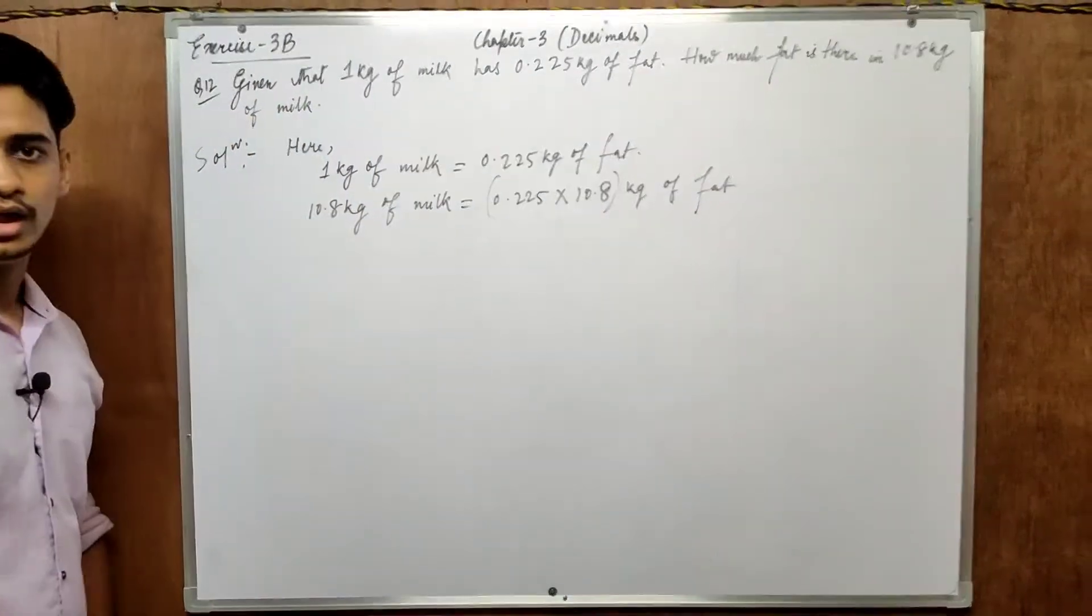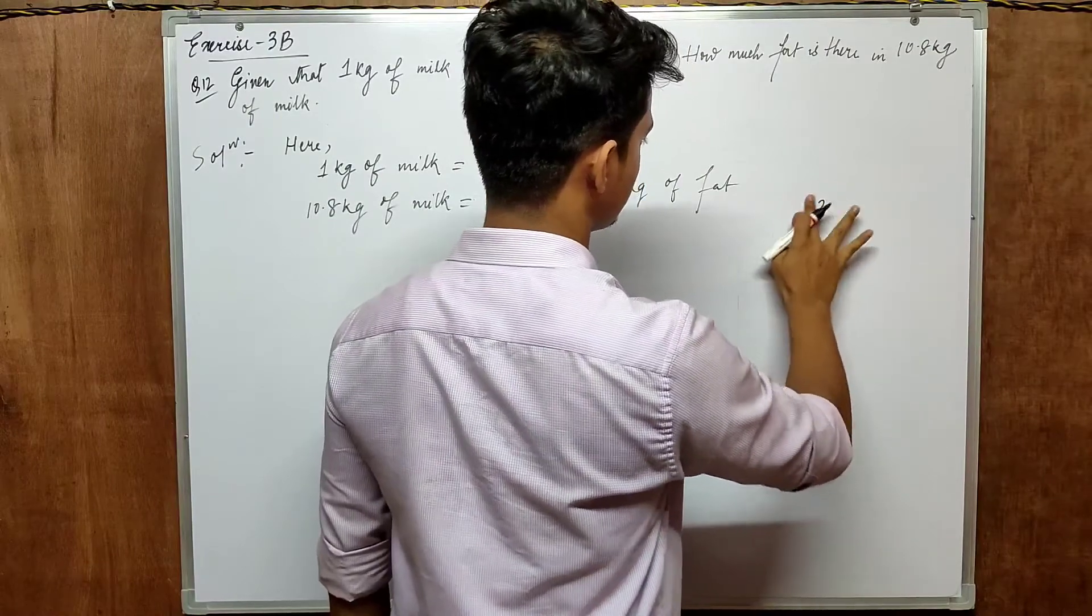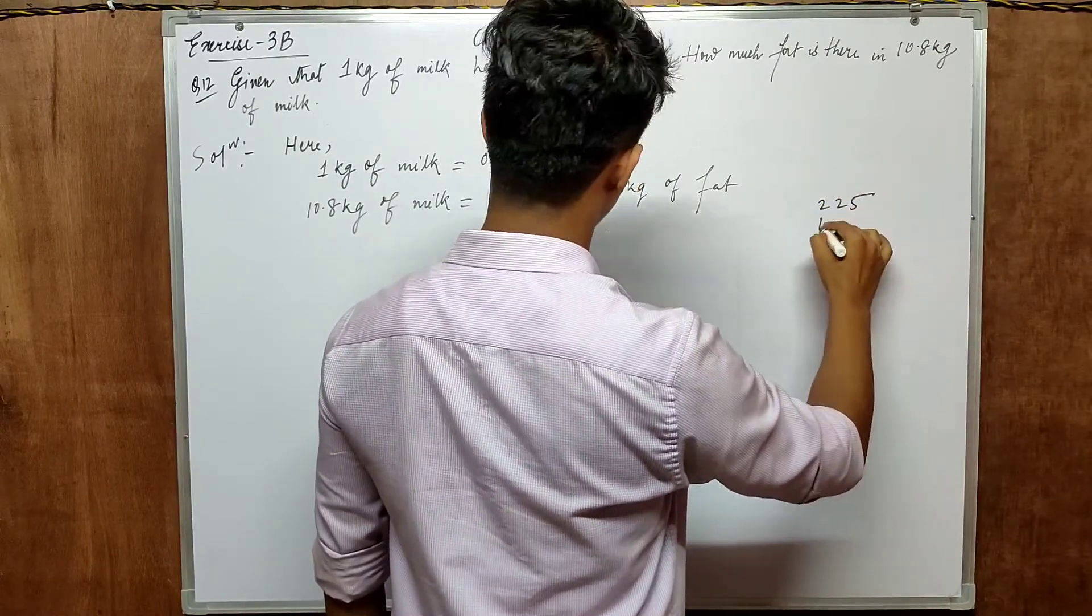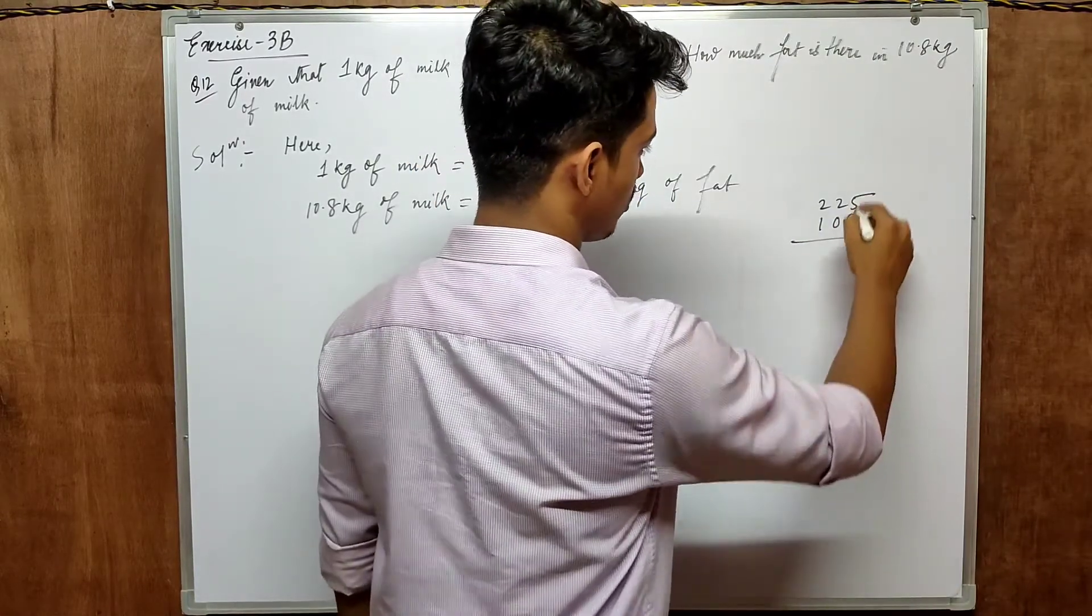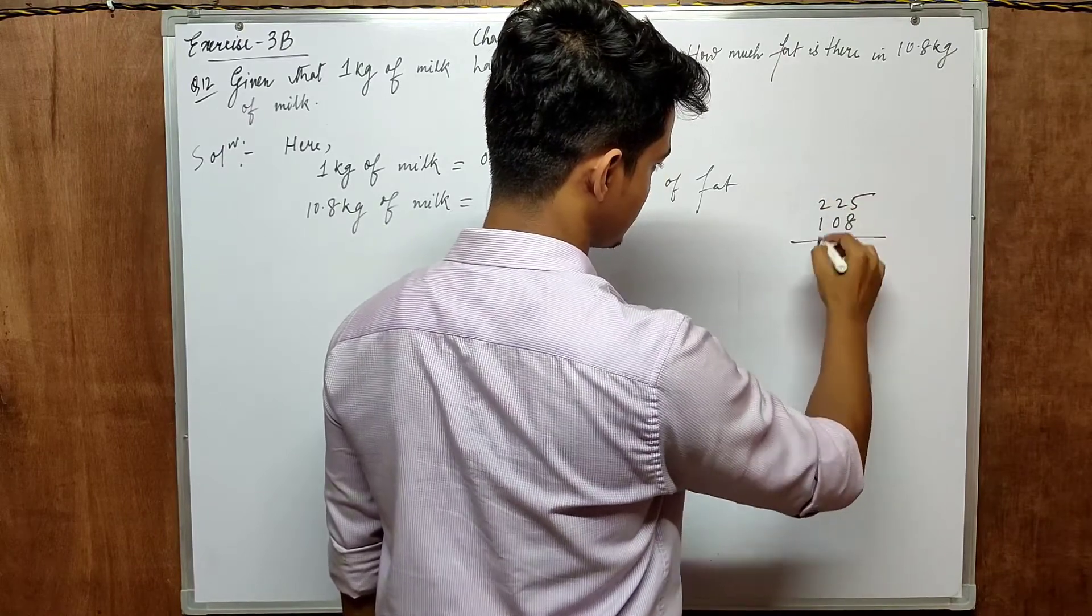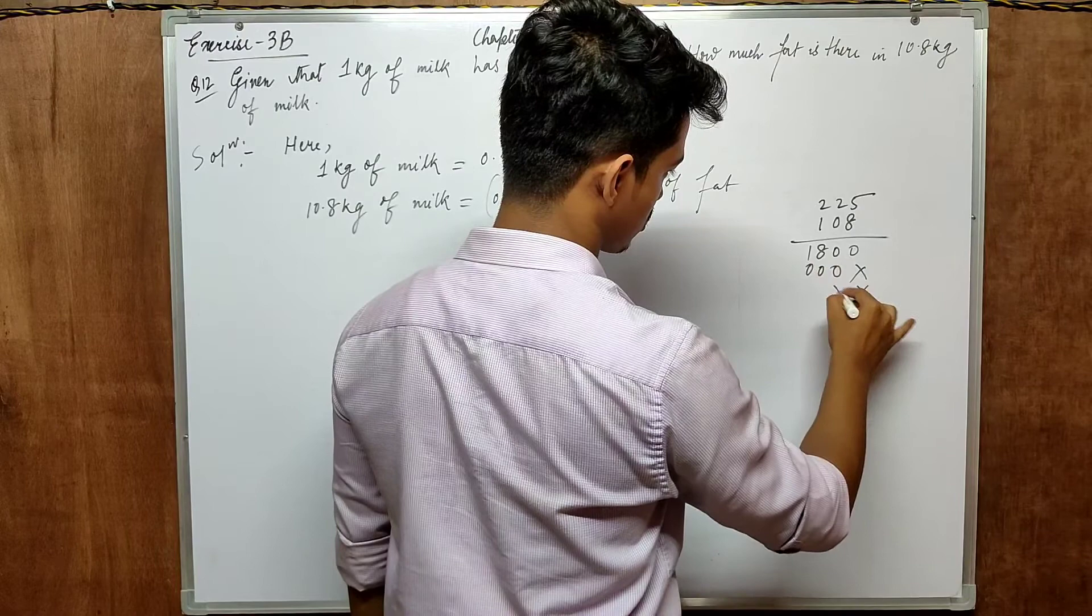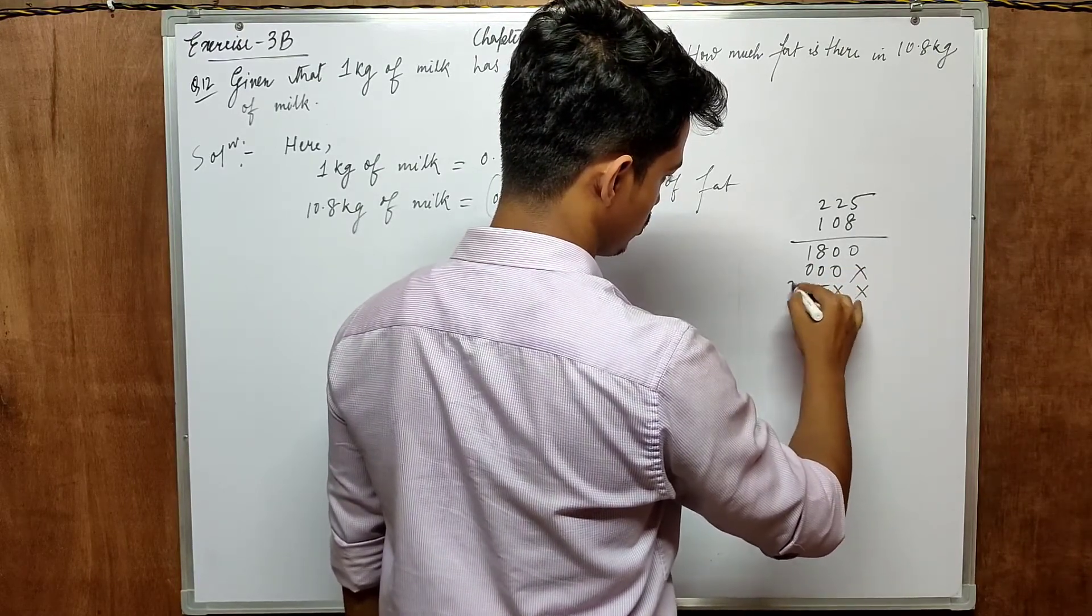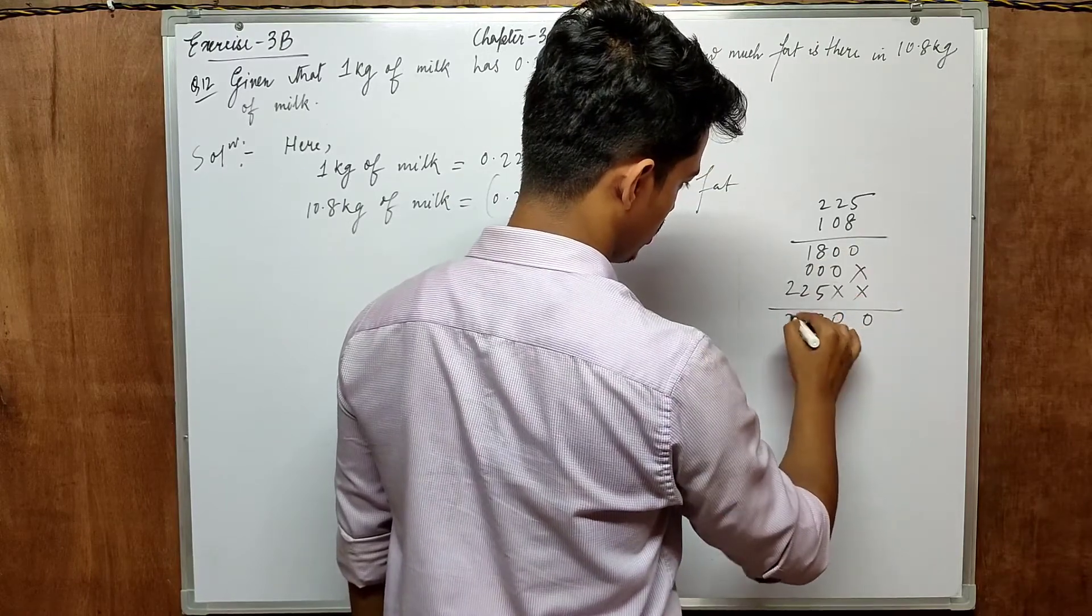What is given? 1 kg of milk equal to 0.225 kg of fat. So they want 10.8 kg of milk contains how many kgs of fat? So what we need to do? 0.225 into 10.8 kg of fat. Just multiply it, 225 and 108. 0, 18, 5, 40, 4 carry, 16, 20, 2 carry, 16, 18. Then 0, 0, 0, cross, cross and then 5, 2, 2. Add 0, 0, 13, 1, 4, 2. So that means 2, 4, 3, double 0.